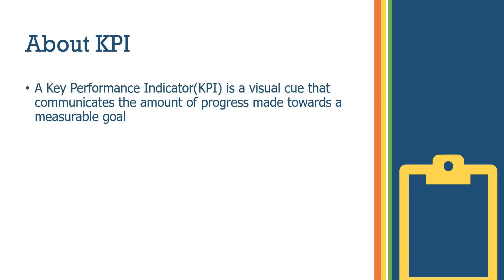We can tell each of these visuals — these charts are the KPI chart. The KPI visual is a visual cue that communicates the amount of progress made towards a measurable goal.